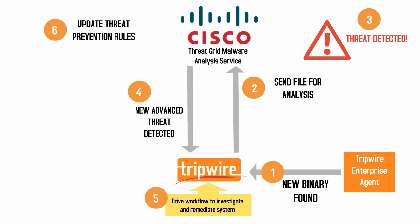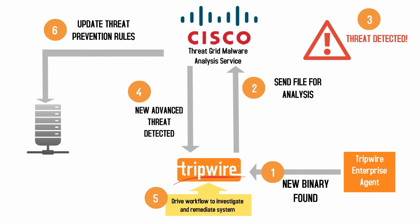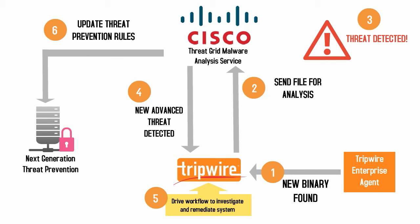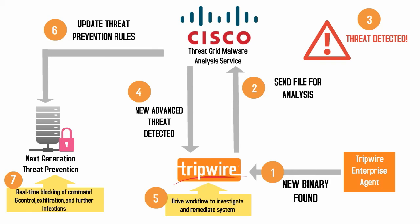Although the network layer may have never seen the suspicious file, that information about the file and its behavior is now part of Cisco's services. Finally, that information is pushed out to the IPS and firewall sitting at your site, so the command and control connection is now blocked at the network level, preventing exfiltration.